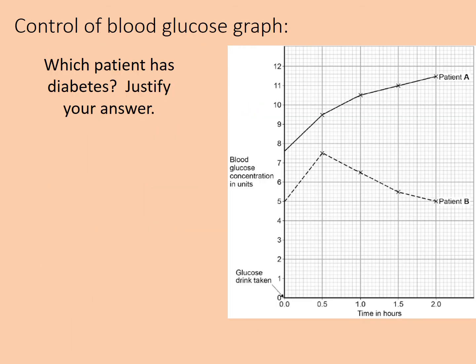Look at this graph: we have patient A and patient B. A drink is consumed at zero hours, and blood sugar is measured every half hour over two hours. Patient A's blood glucose increases rapidly at first then more shallowly. Patient B shows an initial steep increase then a steep drop over the first hour, then less steeply over the next 30 minutes. Which patient has diabetes, and why? Pause and think.